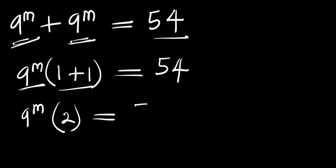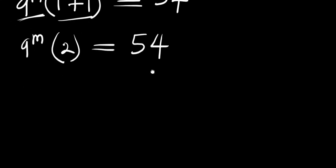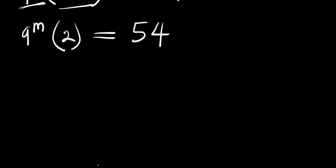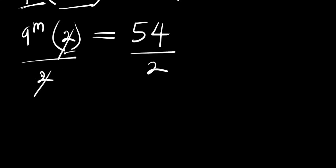And this equals 54. So we proceed — because we have 2 here, we can divide both parts of this equation by 2. The 2 will cancel, and we have 9 power m equals 54 divided by 2, which is 27.